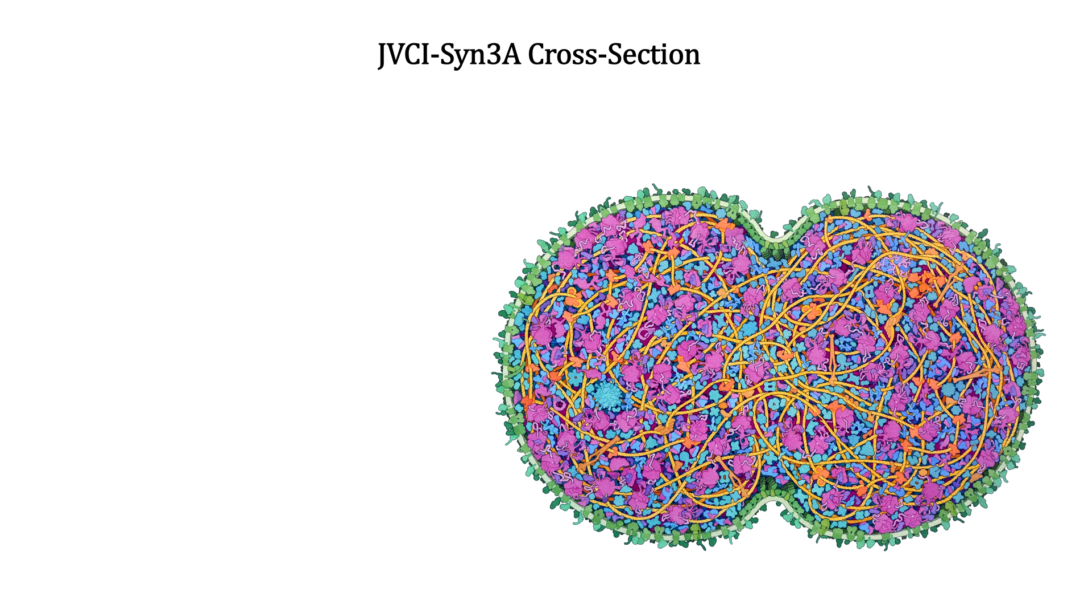Here's an illustration of Syn 3a's cross-section as it is reproducing. It shows all the key macromolecules. For acids, we have DNA in bright yellow and RNA in shades of magenta.